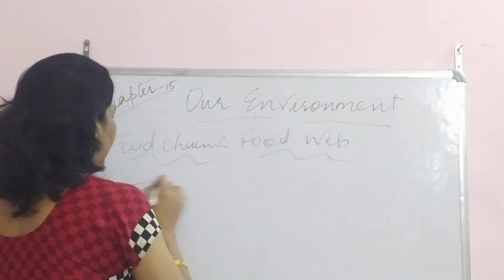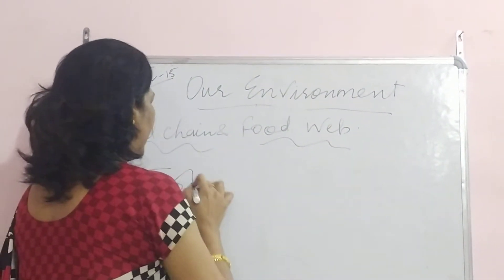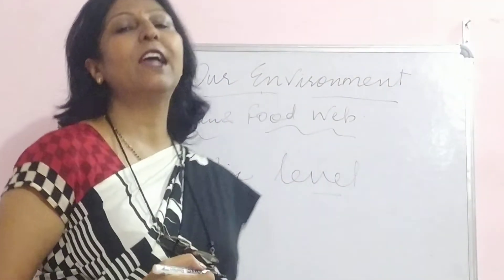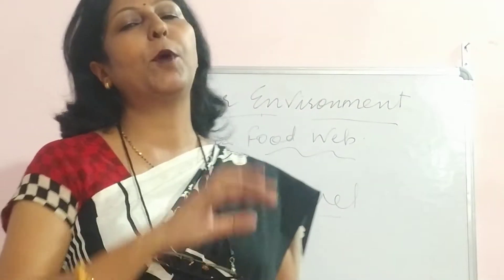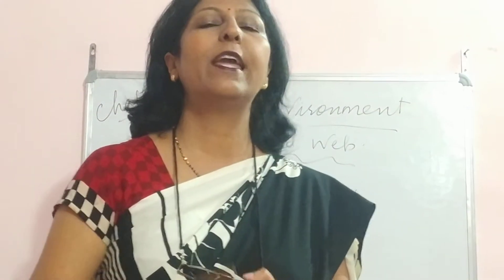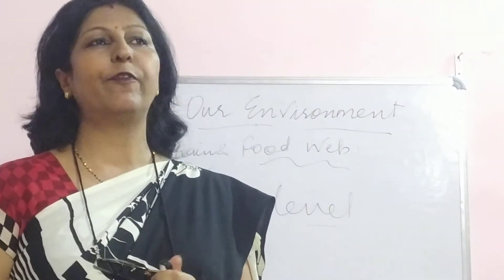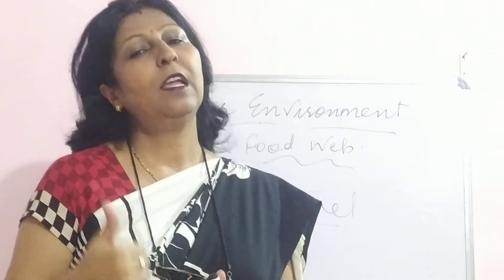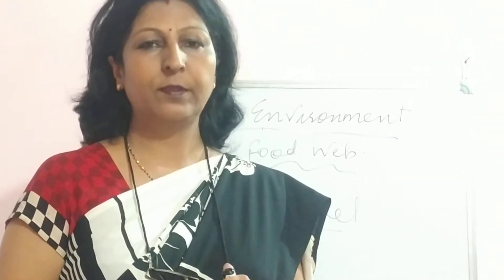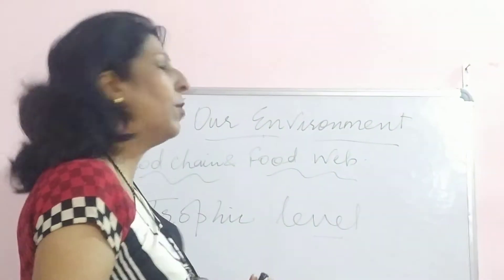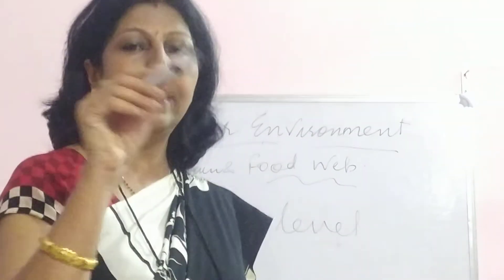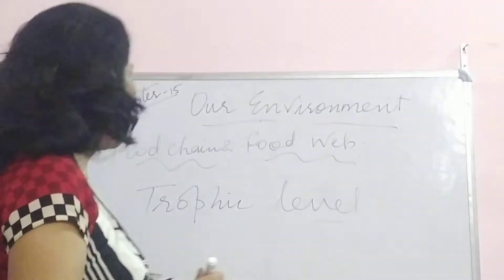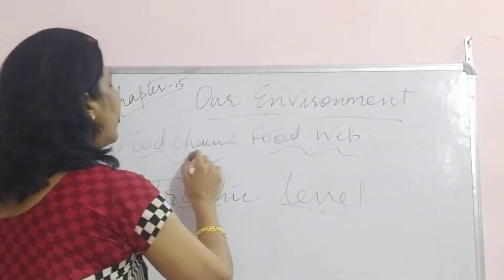Now what is a trophic level? You are going to hear it quite often. When we talk about a particular ecosystem, we have three components — three strata, you can say three levels — that is producers, consumers, and decomposers. So these are the trophic levels.